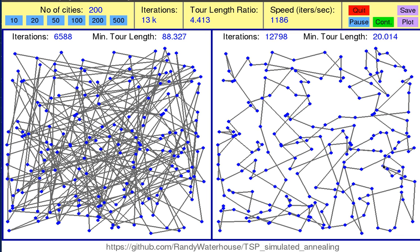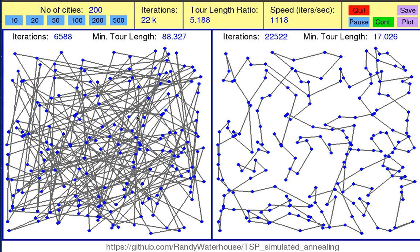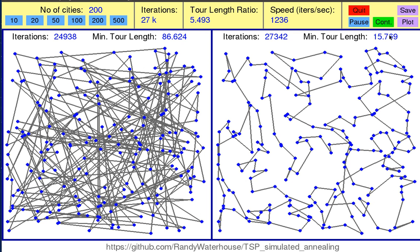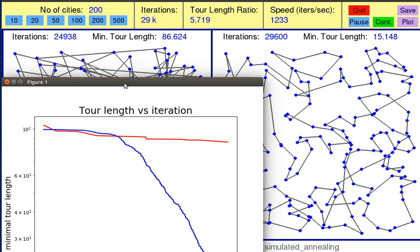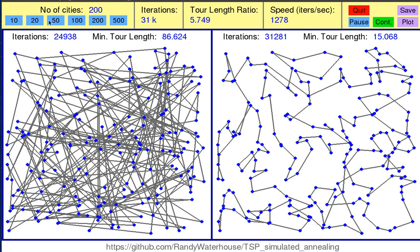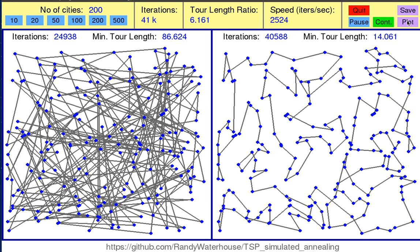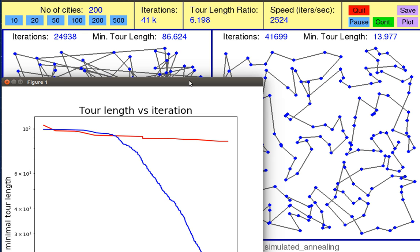An image file is generated on your computer locally which shows the current window output. We can also do a plot like this — the plot of the tour length for direct sampling in red and simulated annealing in blue versus the iteration number. We can close the windows, the simulation continues, and we can once again do the plot. And now it's updated.